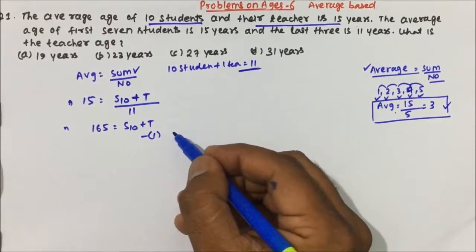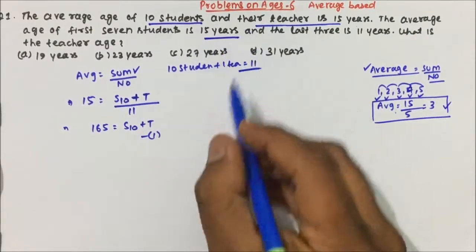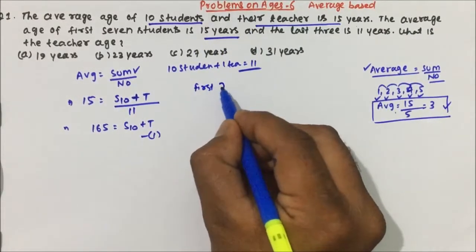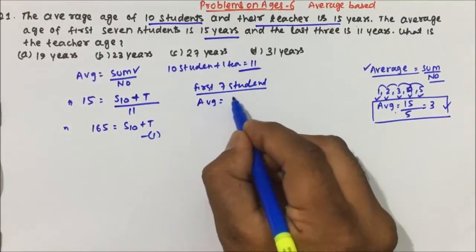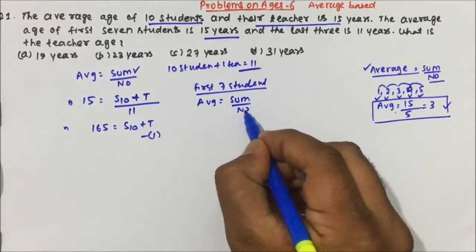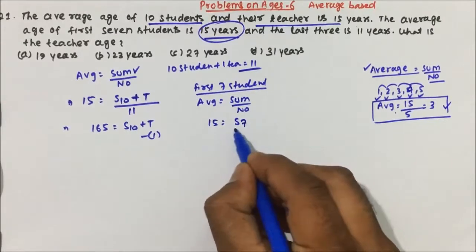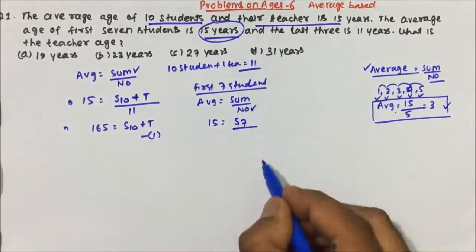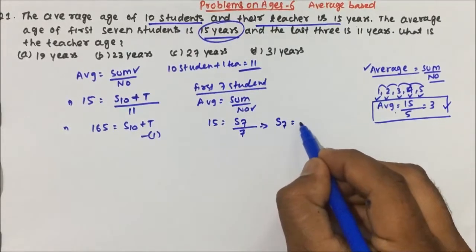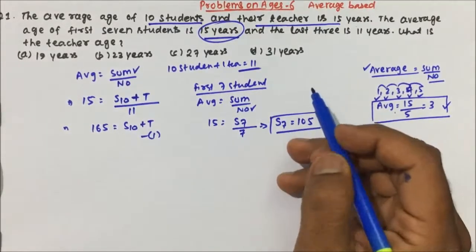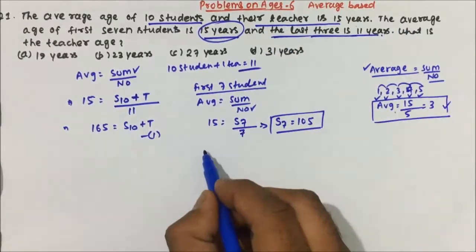Now read the next line: the average age of the first 7 students is 15 years. So average = sum / number. Average is 15, sum is S7 (sum of 7 students' ages), and number is 7. Therefore, the sum of 7 students' ages = 15 × 7 = 105.